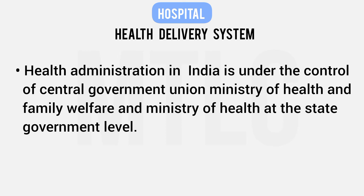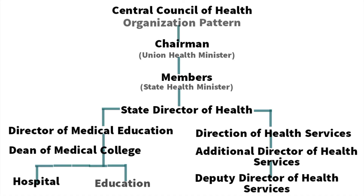What is the health delivery system? We have a health administration control structure. In the central government, there is the Union Ministry of Health and Family Welfare. All hospitals are connected through the Central Council of Health. There are states, Directorate of Medical Education, Dean of Medical Colleges, and the Directorate of Health Services with additional directors and deputy directors.